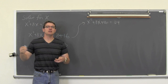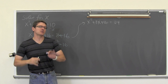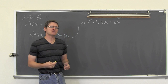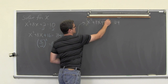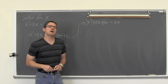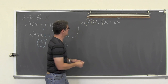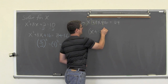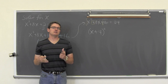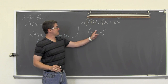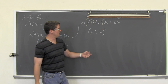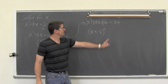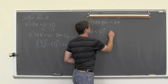This is a perfect square trinomial. To factor: square root the first term (x), keep the middle sign (positive), square root the last term (4). This gives us (x + 4)² = 24. If you don't believe it, write x + 4 times x + 4 and distribute — you'll get the same trinomial.